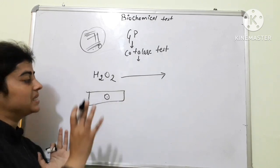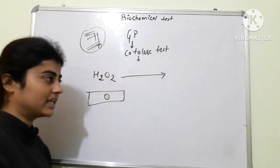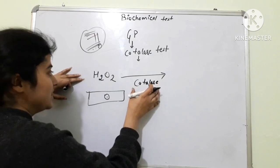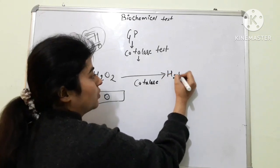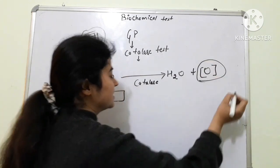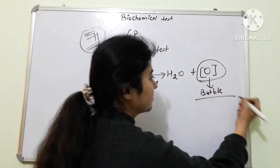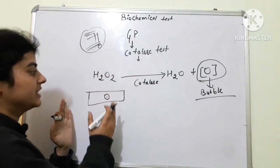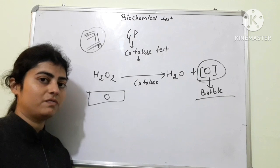If we see bubbles forming, then it is catalase positive. If there is no formation of bubbles, then it is catalase negative. What happens is: if bacteria produces catalase, this enzyme will break down the H₂O₂ into H₂O plus nascent oxygen (O). This production of nascent oxygen causes the formation of bubbles. If catalase is positive there is bubble formation; if catalase is negative there is no bubble formation.